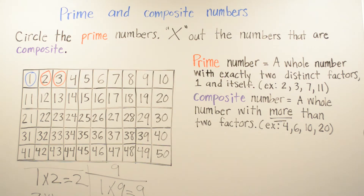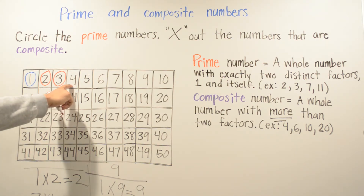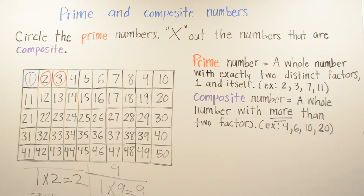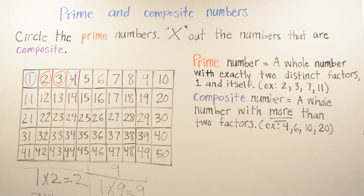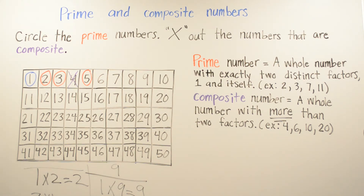Next we go to 4. Is 4 going to be prime or composite? It is going to be composite, so we're going to X it out. Remember, X out your composite numbers. 4 is composite because you can do 1 times 4, 4 times 1, and 2 times 2 equals 4. So that's why it's composite. Then 5 is going to be prime, and 6 is going to be composite.